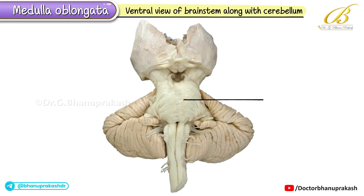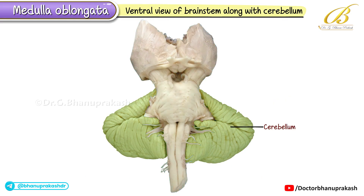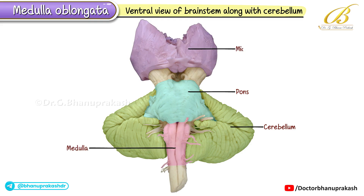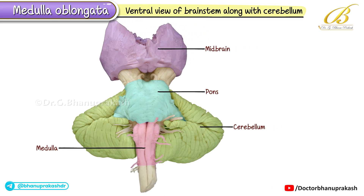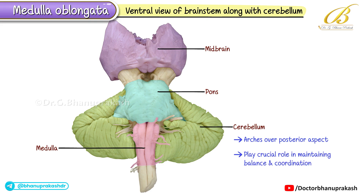Now we see a ventral view of the brainstem along with the cerebellum. From this perspective, you can appreciate how the pons, medulla, and midbrain stack together. The cerebellum arches over the posterior aspect, playing a crucial role in maintaining balance and coordination.